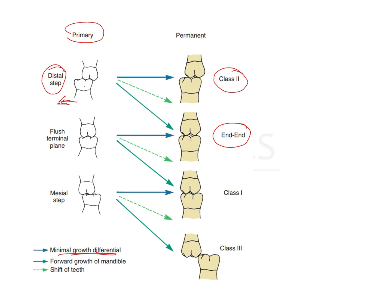With minimal growth, a distal step shifts into a class 2, since the maxillary molar remains more mesial and the mandibular molar more distal. If there is forward growth of the mandible, the mandible advances and this relationship gets corrected, shifting into an end-on relationship. Slight mesial movement of the mandibular molars due to growth can also change the relationship from a distal step into an end-on molar relationship.